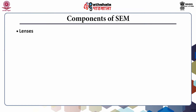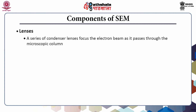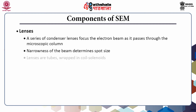The lens system is used to focus the electron beam, but it is different from the optical lenses used in a light microscope. The lens system in scanning electron microscope is not made up of glass. A series of condenser lenses in the scanning electron microscope are used to focus the electron beam as it passes through the microscopic column. The narrowness of the beam determines the size of the spot when it contacts the surface. These lenses are tubes wrapped in coils and referred to as solenoids.